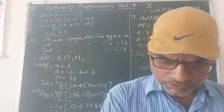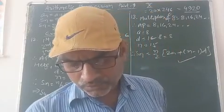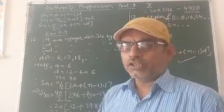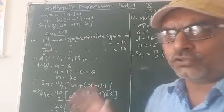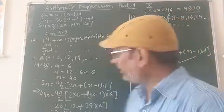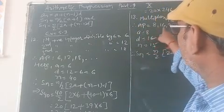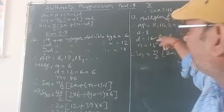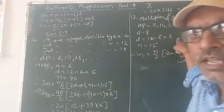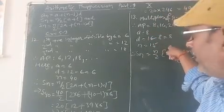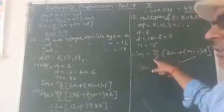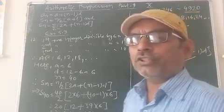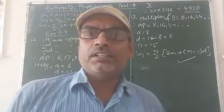Now question number 13. Find the sum of first 15 multiples of 8. The multiples of 8 are 8, 16, 24, and so on. So the AP is 8, 16, 24. The first term is 8, the common difference is 16 minus 8 equals 8, and n equals 15. Therefore Sn equals n by 2 into 2a plus n minus 1 into d. By using this formula and putting the values, you can find the result.